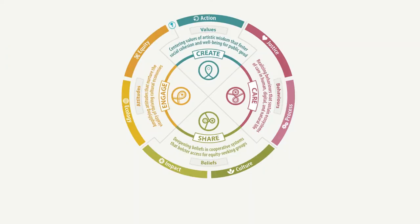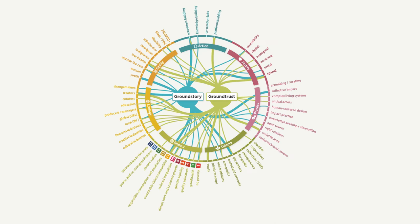From these four elemental seeds, we have identified seven key perspectives. Under the Create seed is Action, under Engage seed is Equity and Ecology, under Share seed is Impact and Culture, and Care seed is Justice and Process. From these seven perspectives, we have then identified sixty-three individual priorities, to help structure and keep an eye on our impact long term.